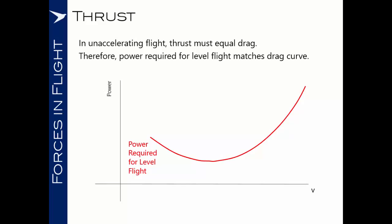If we now look at the power which is available to us, we'll find that it follows a curve something like this for a jet engine. The point at which these two lines intersect is the maximum speed that we can fly in level flight. This is dictated by the maximum output of our engines and the amount of drag that the airframe is producing.